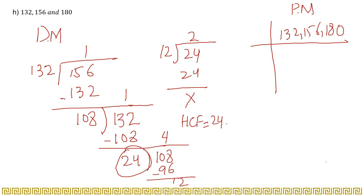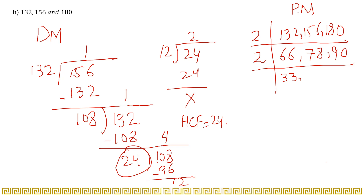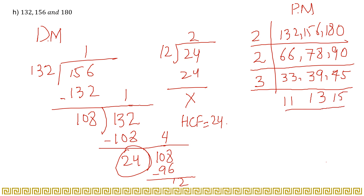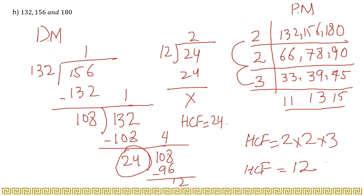Now prime factorization for 132, 156, and 180. Starting with 2, then 3: 132 = 2² × 3 × 11, 156 = 2² × 3 × 13, 180 = 2² × 3² × 5. The three resulting quotients after dividing differ and share no further common factor. So the HCF is 2 × 2 × 3 = 12. Note that the division method gave 24 for just two numbers, but with all three the HCF is 12.